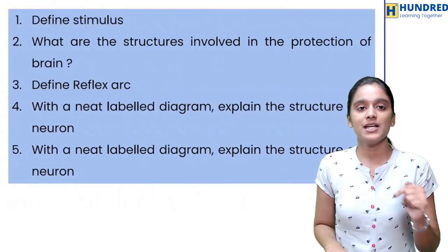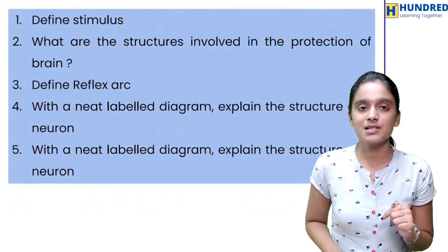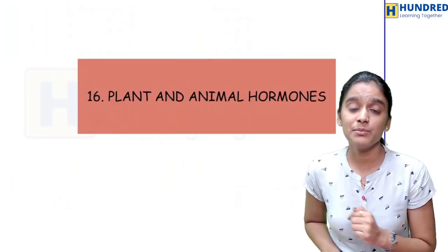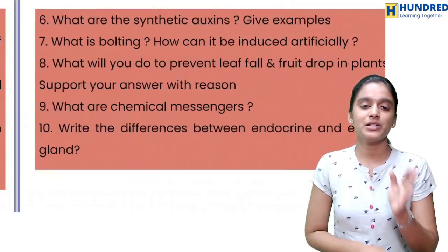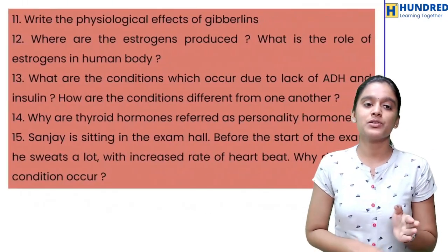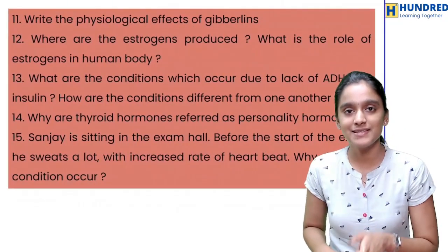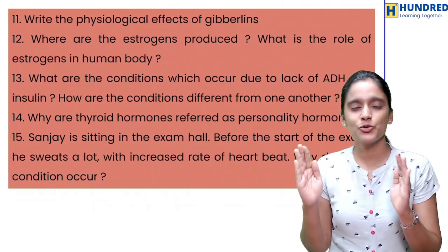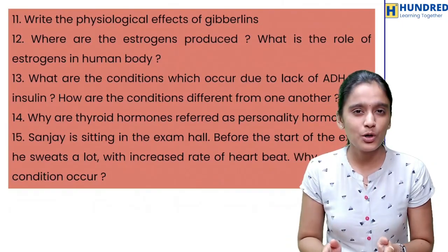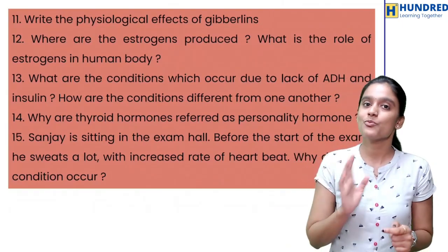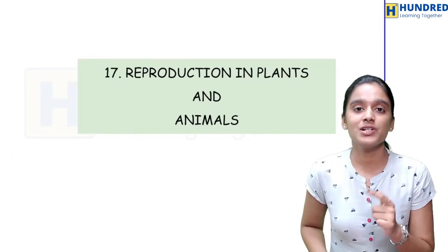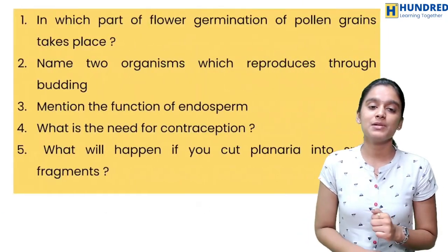Next, in the Nervous System chapter: 5 questions, along with 5 more questions. This is a very important chapter, so you will learn more about Reproduction in Plants and Animals.